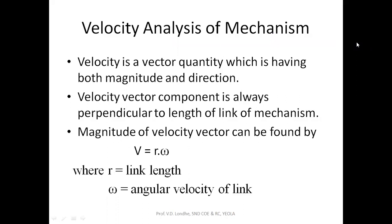So what is velocity? Velocity is a vector quantity which has both magnitude as well as direction. This velocity vector component always acts perpendicular to the link length for any given mechanism. Since velocity is a vector quantity, its magnitude is defined using the formula v = r × ω, where r is the link length and ω is the angular velocity of the given link in the mechanism.